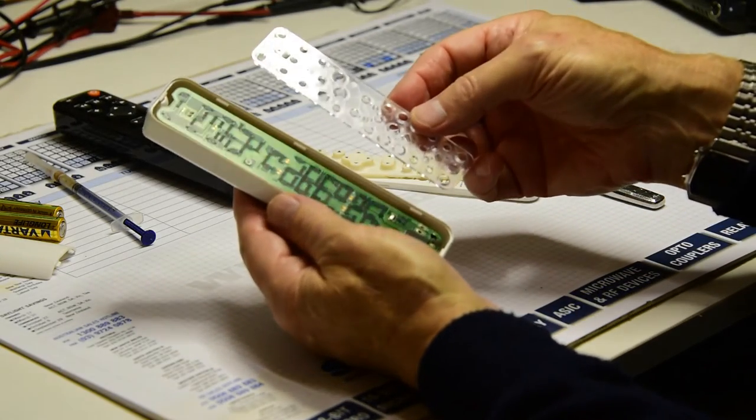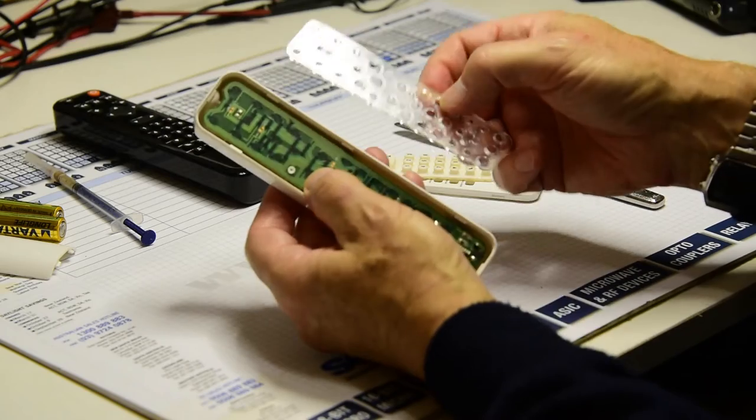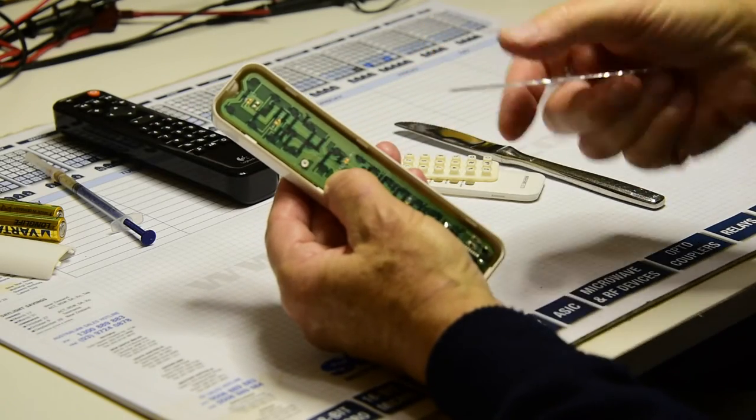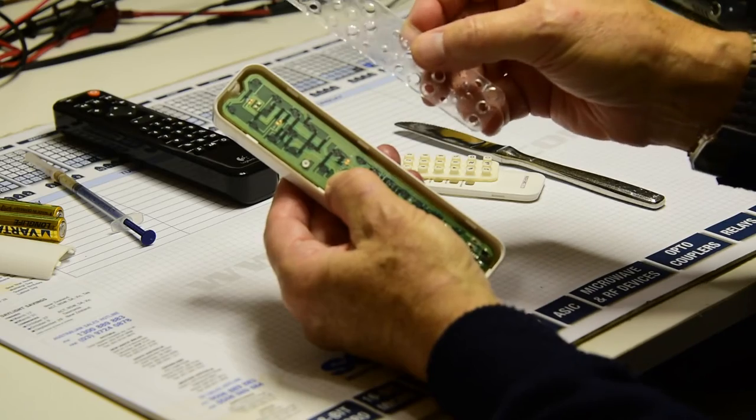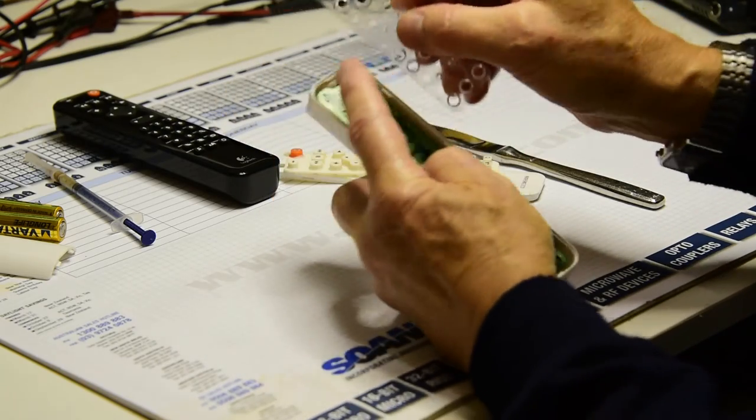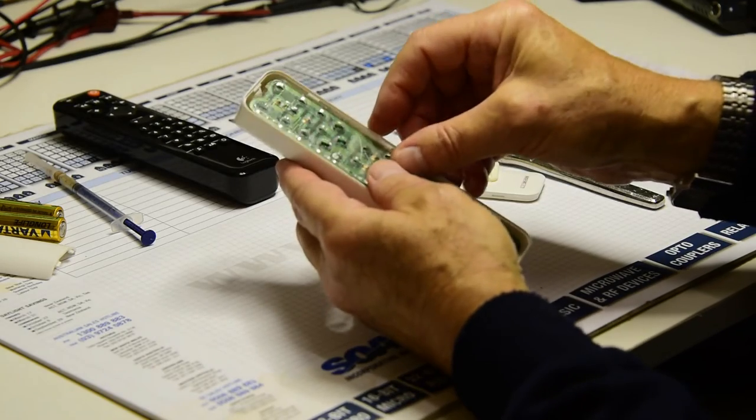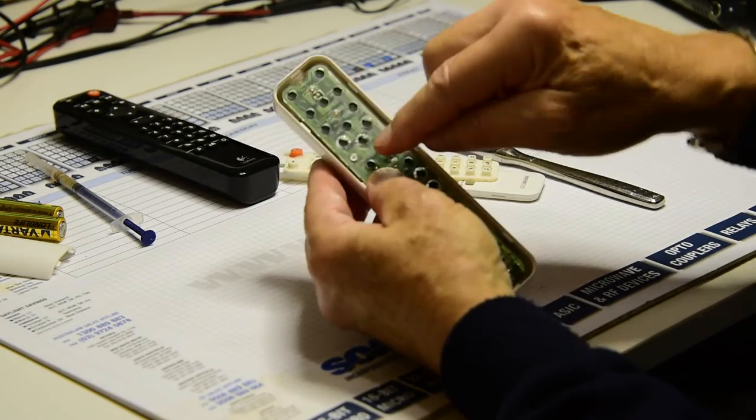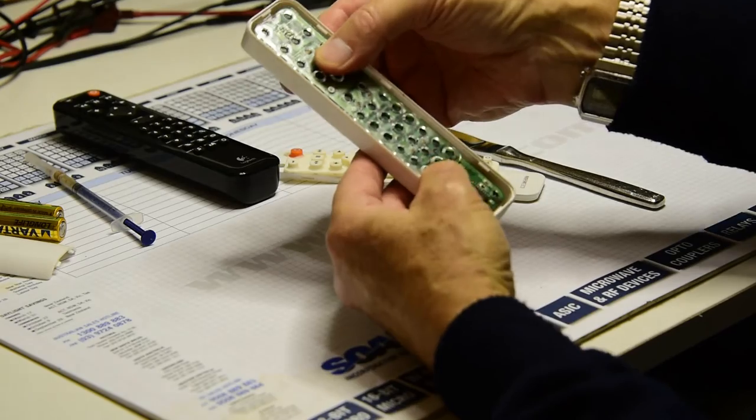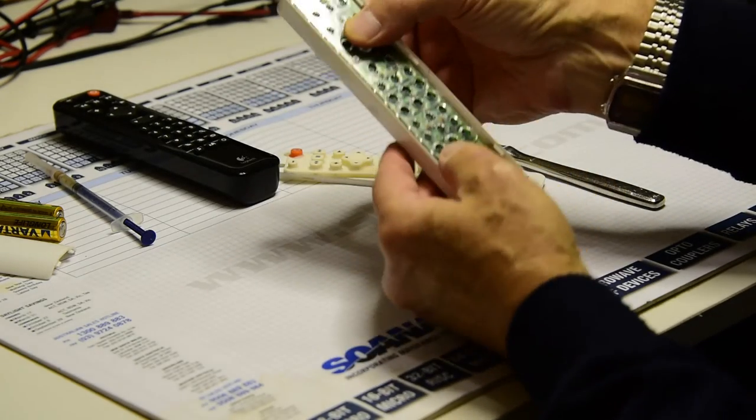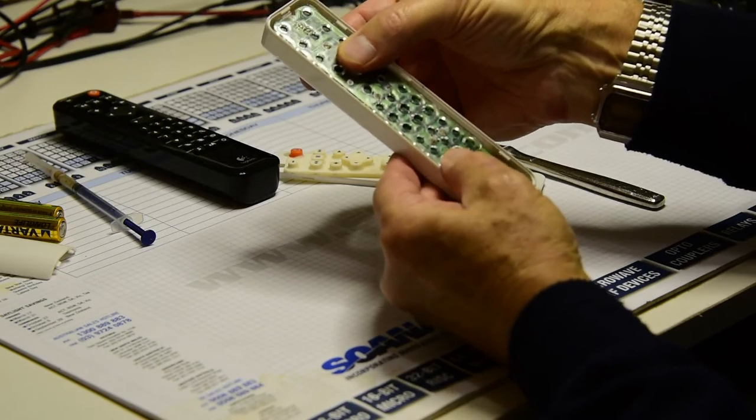Put back the insulator. Notice that there's this plastic peg sticking up through the board that positions this insulator with a corresponding hole. So make sure you line that up so the peg comes through the hole and that will then correctly align the insulator with each of the pads on the circuit board for the buttons.